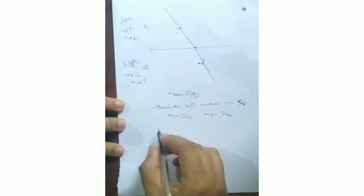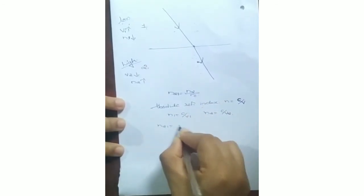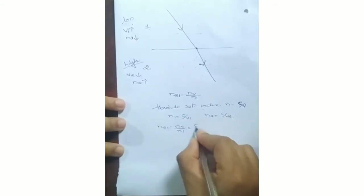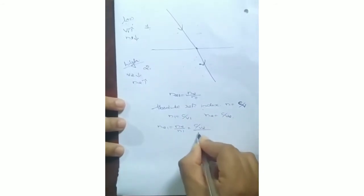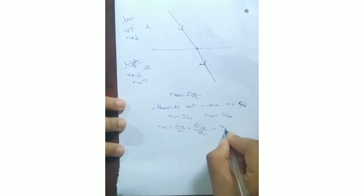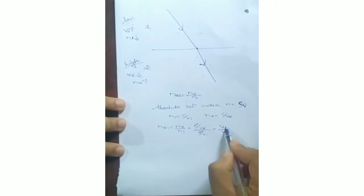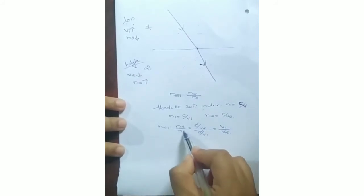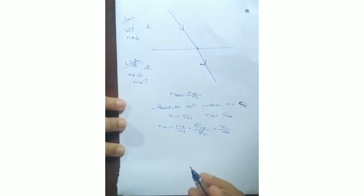Substituting into the formula: N21 = N2/N1 = (C/V2) ÷ (C/V1). C and C cancel, giving N21 = V1/V2. From this we can understand that velocity and refractive index have a reciprocal relationship — when the refractive index is higher, the velocity of light will be lesser.